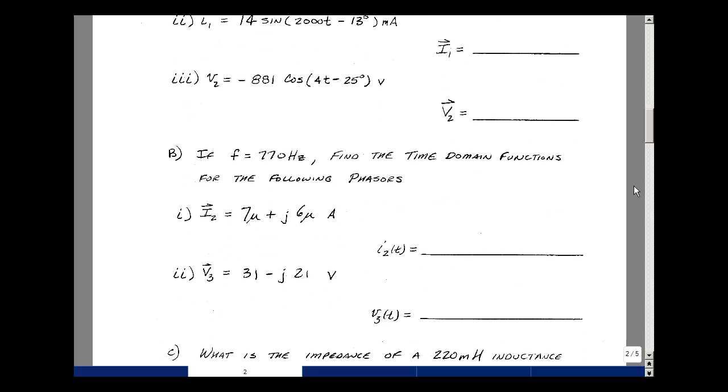The second part of problem one is that if you have a 770 hertz signal, can you find the time domain functions given the following phasors? So I2 of t and V3 of t.